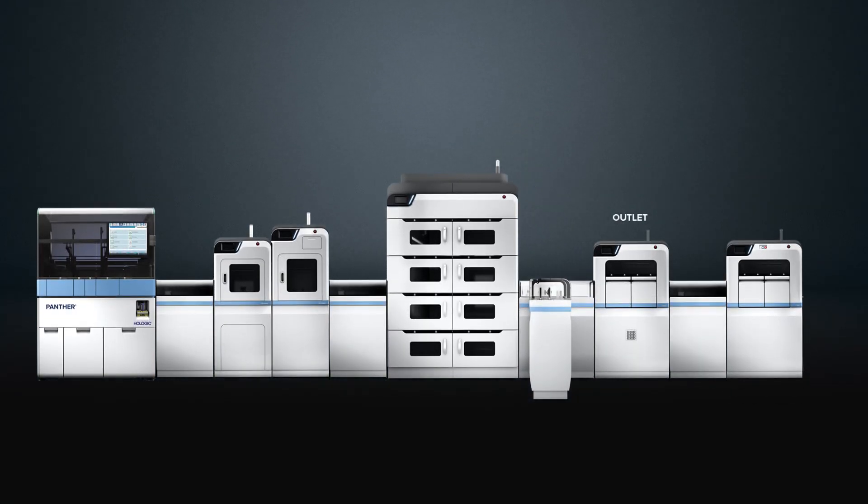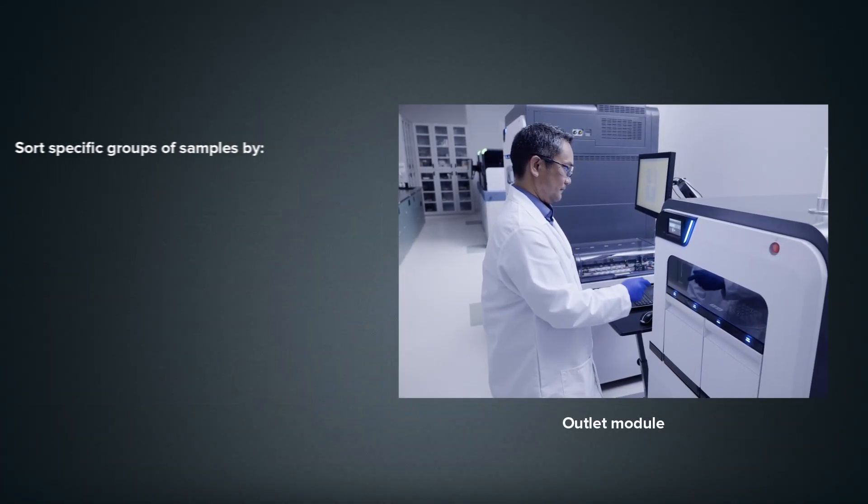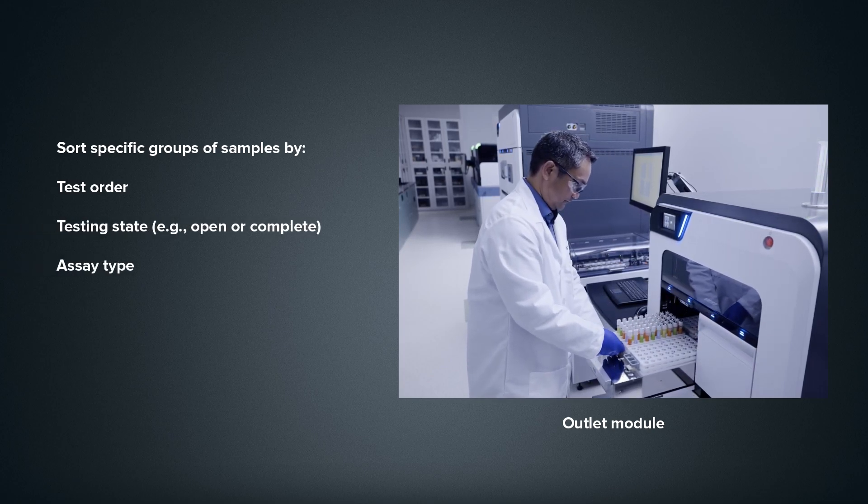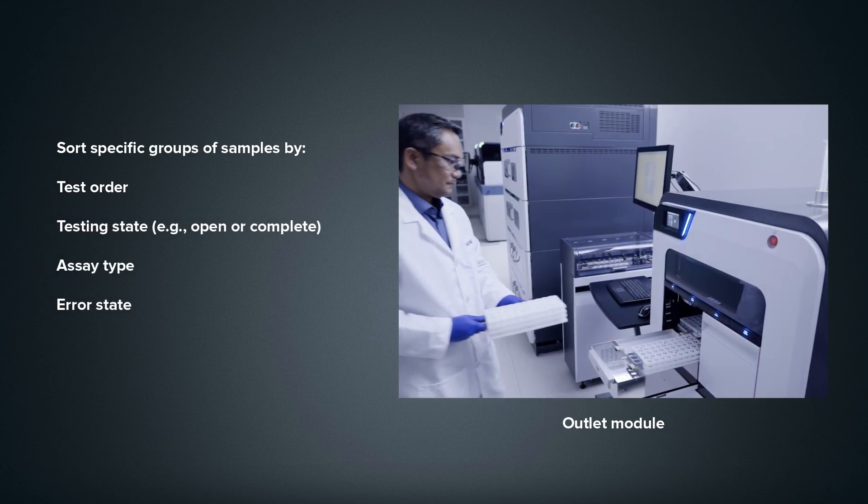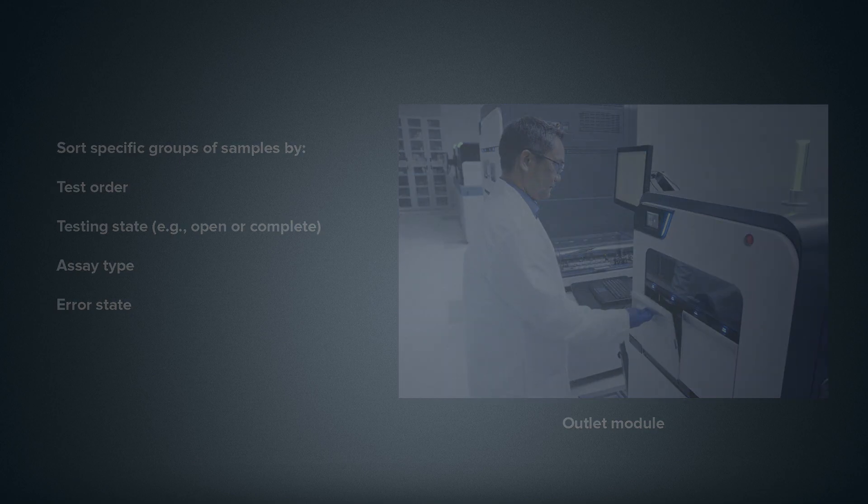The outlet module allows your lab to create custom filters to automatically sort out samples with specific test orders, assays or errors, allowing them to bypass storage and be routed directly to the outlet module for removal or alternative testing if needed.